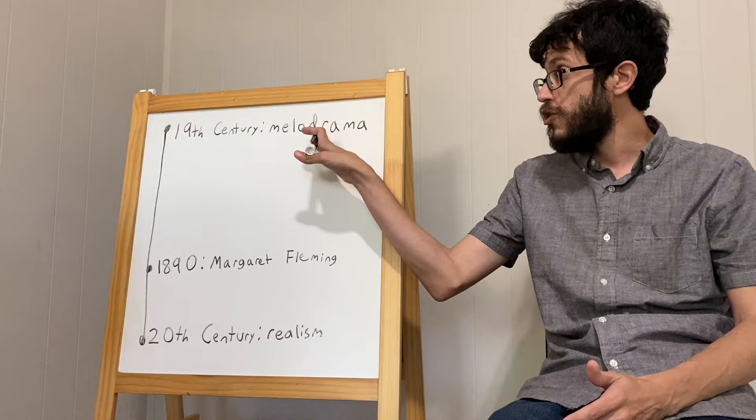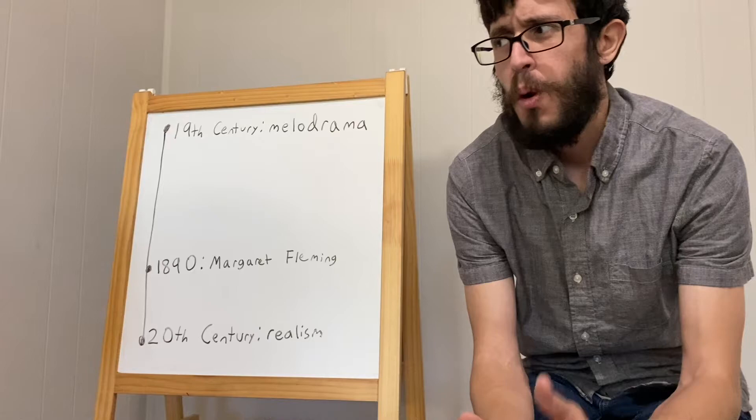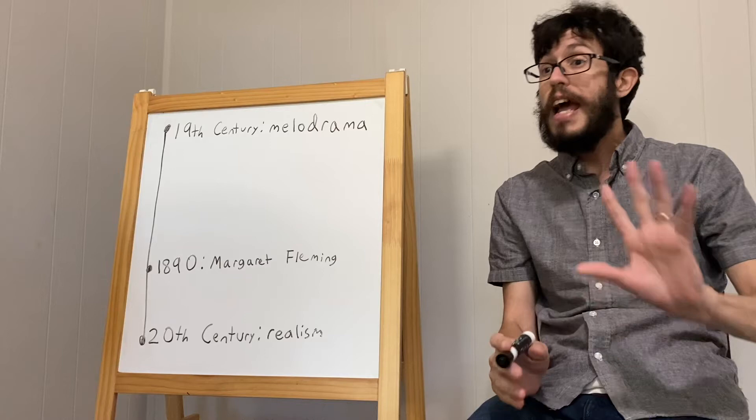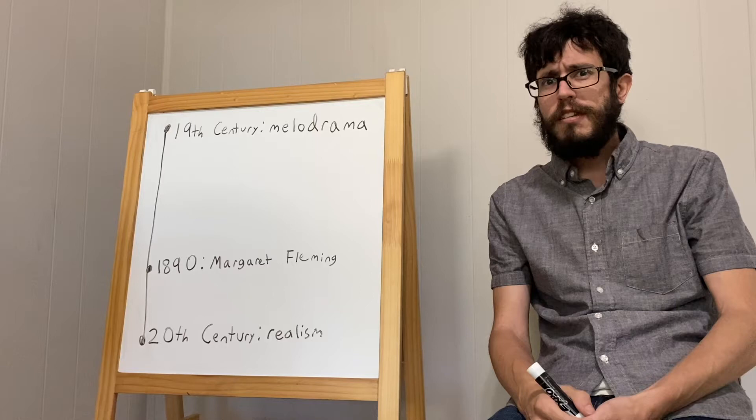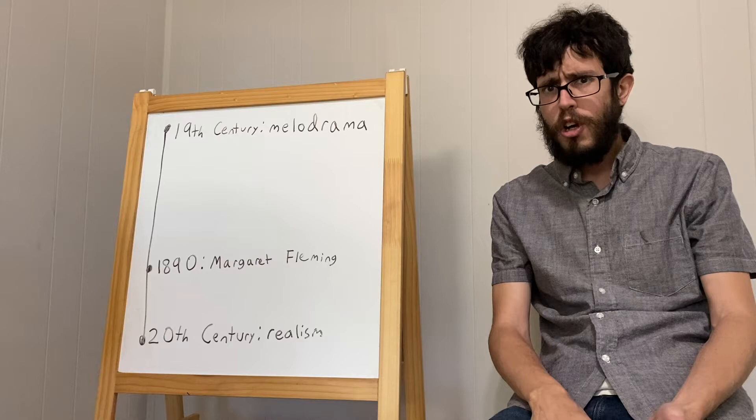When I say melodrama, what I'm talking about is a genre — not just a descriptive term. Melodrama means big emotions, improbable events, people talking in ways that they would never normally talk. Some examples of 19th century melodrama would be anything by John Howard Payne, or Metamora by John Augustus Stone.